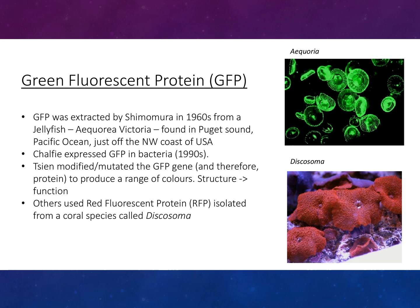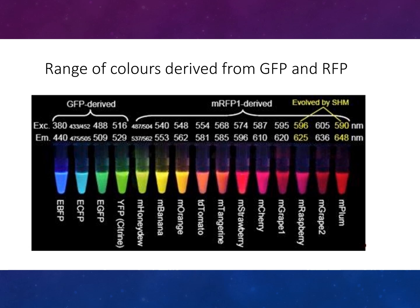Other researchers also use red fluorescent protein (RFP), isolated from a coral species called Discosoma. In this diagram here you can see the range of colours derived from GFP and RFP and their different wavelengths.